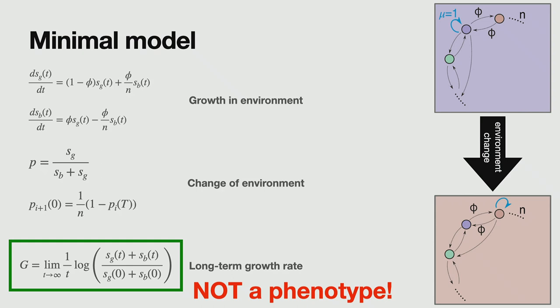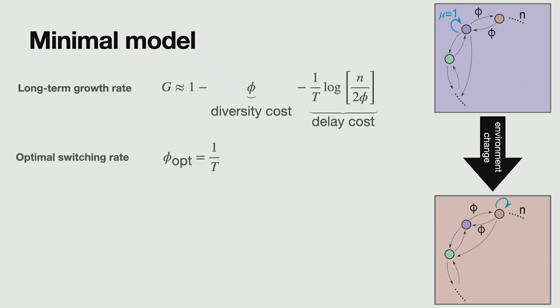I agree that the growth rate in a certain environment, or the maximal growth rate, this is a phenotype, but this thing, what I'm going to maximize, this is just evolutionarily selected. Having that out of the way, I can now just use G.